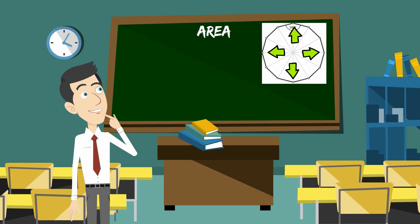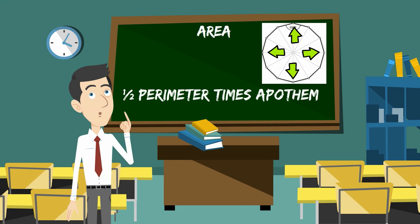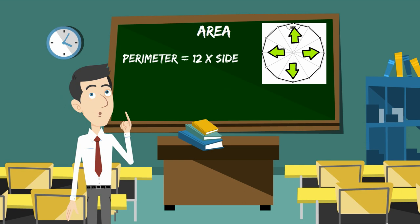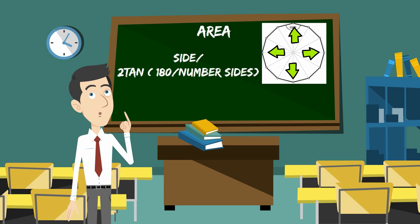You can find the area of a dodecagon by multiplying one-half perimeter times the apothem. The perimeter equals 12 times the side length of one side.